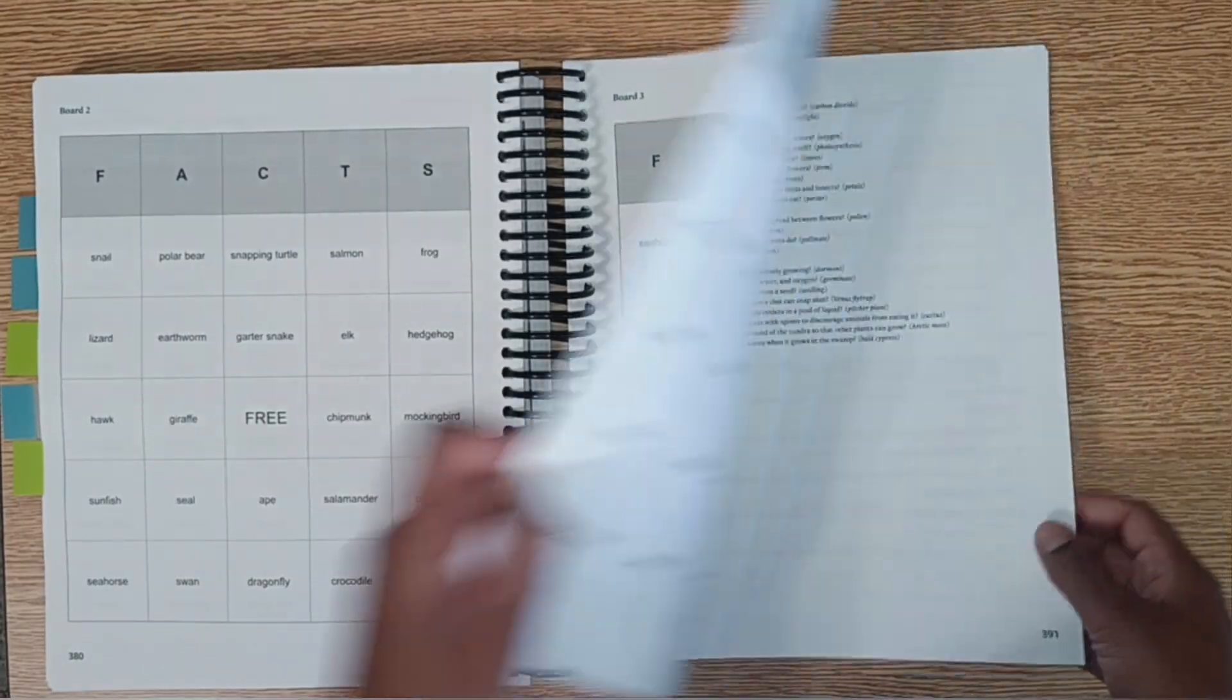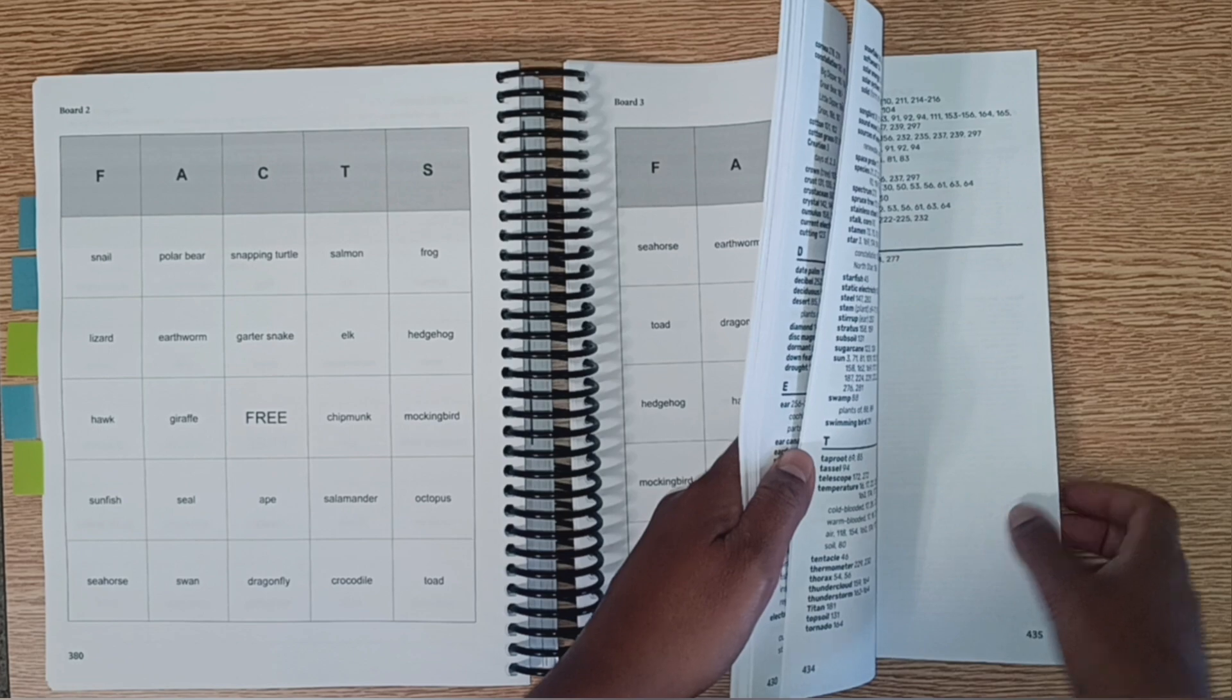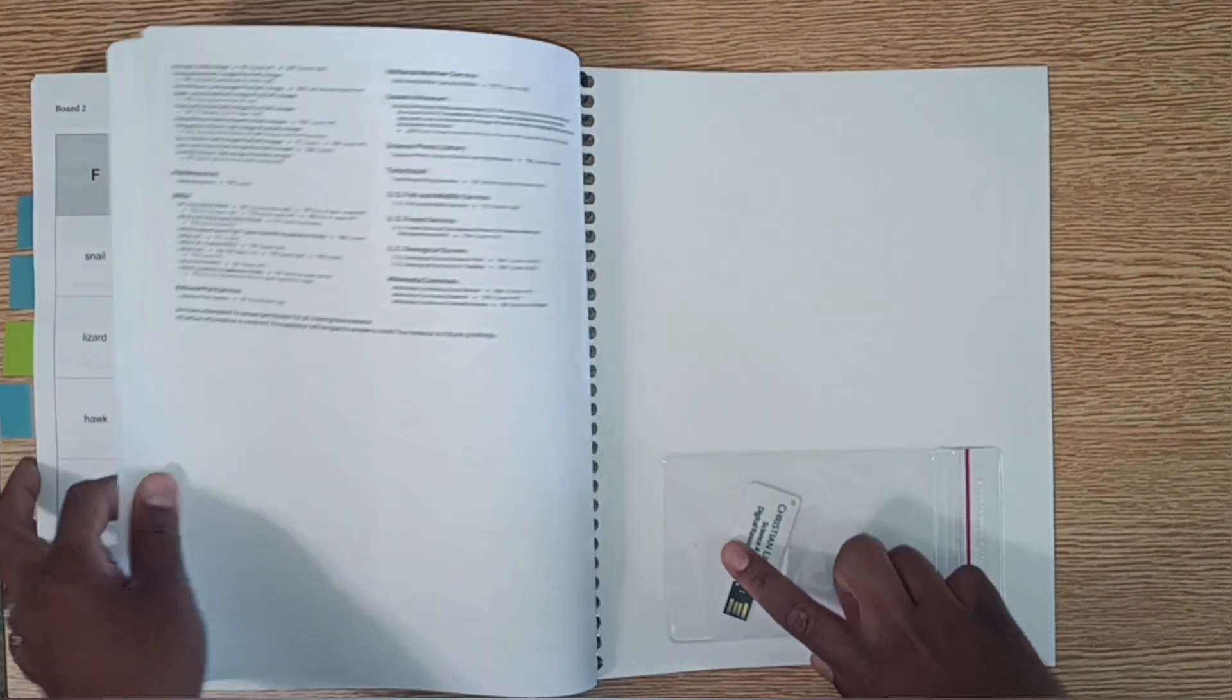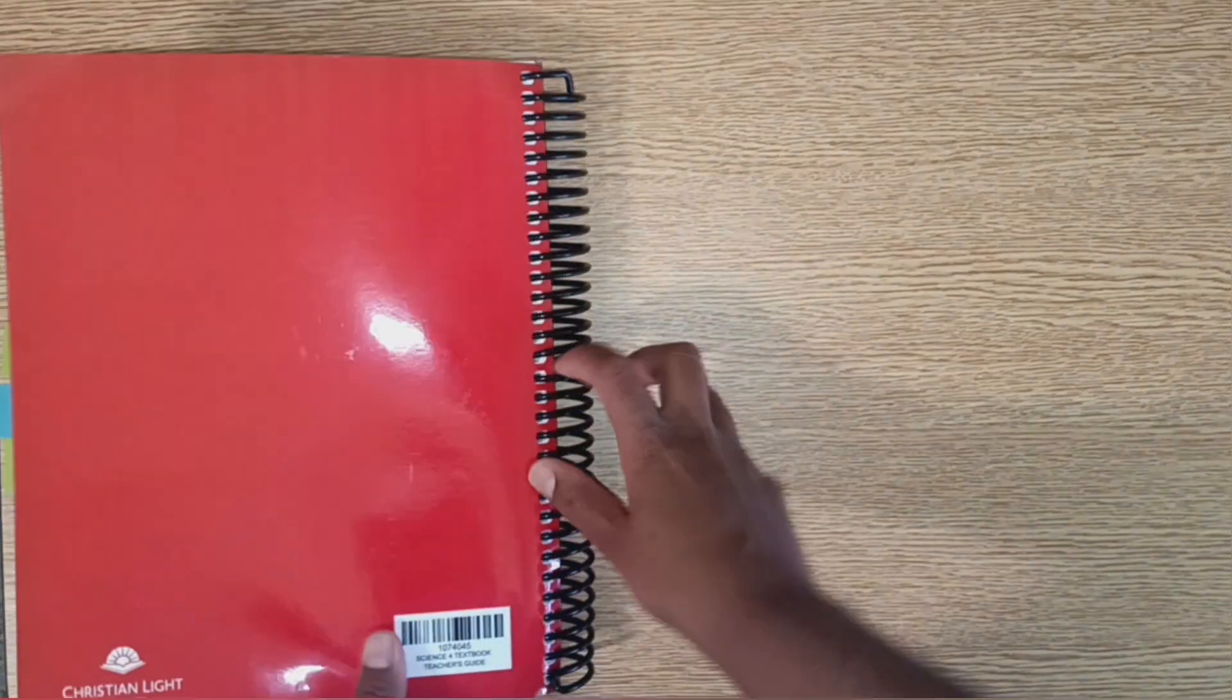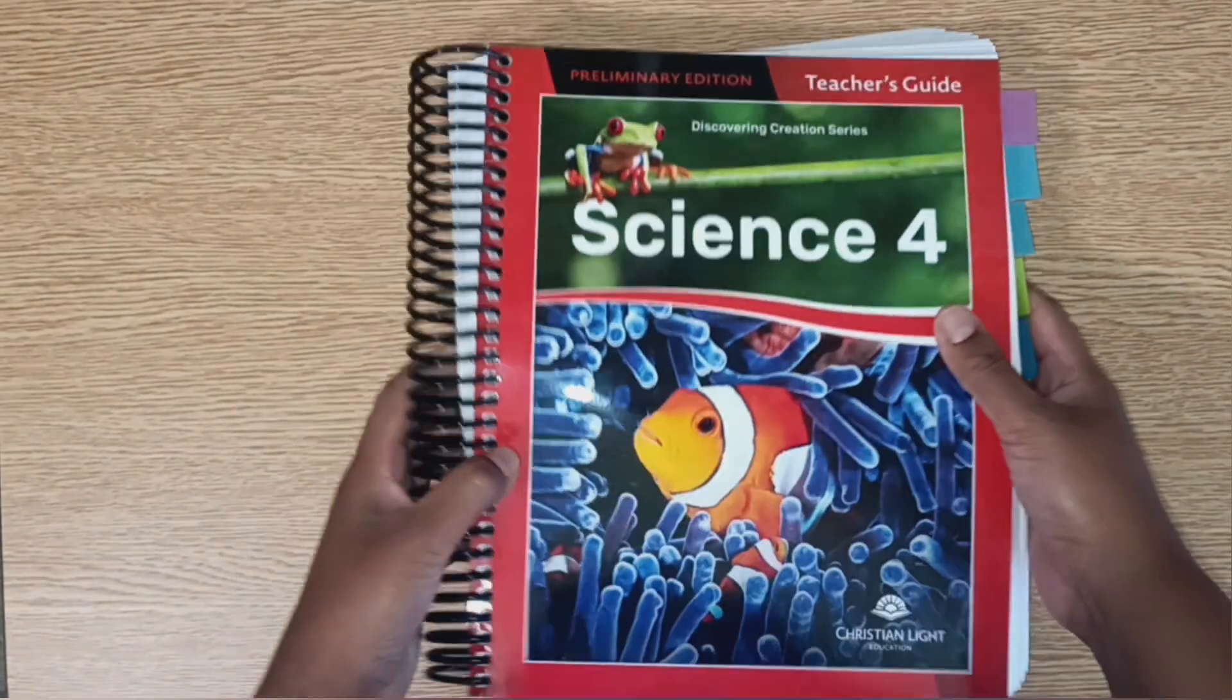All of these reproducibles are also available in this flash drive that's in the back of the book. So this is a pretty hefty book, but it's packed with a lot of information.